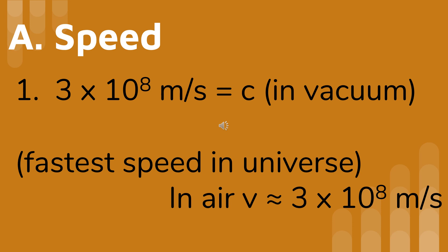Radio waves, microwaves, x-rays, and all other electromagnetic radiations travel at this speed in a vacuum. When light leaves a vacuum and enters a medium like water or diamond, it travels at a slower speed.